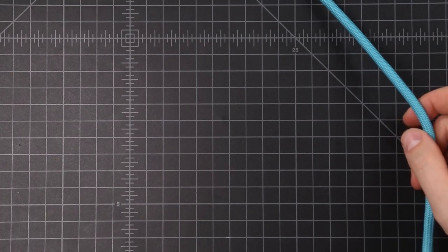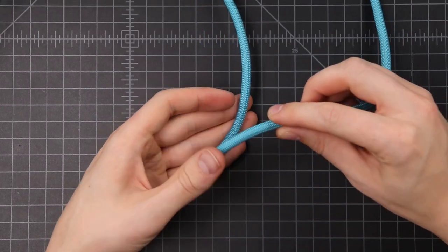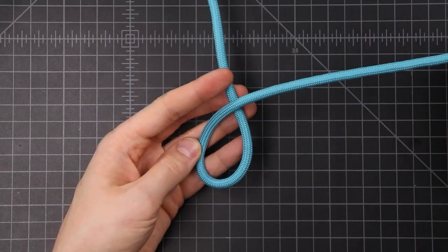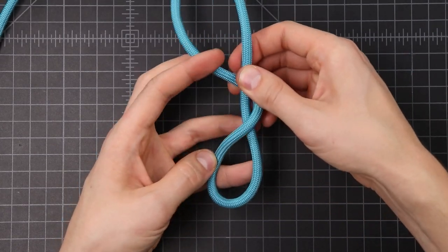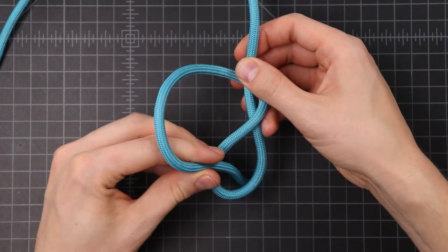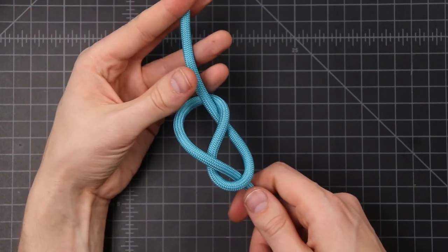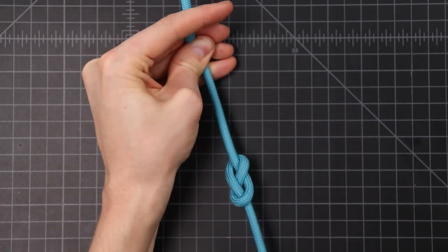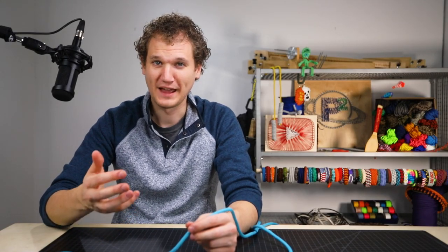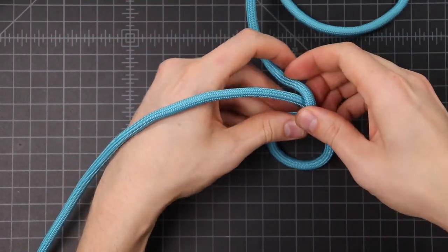I'm going to start with my cord on the top this time. We're going to start by just making a single loop with our working end on top, and then we'll bring that working end around the back and put it down through the loop. And that's all there is to the figure eight. You want to make sure it's dressed nice and tightly before using it. So I'm going to tie this knot for you again, and I'll show you another useful feature of this knot. We'll just leave a little bit more slack on the end this time.